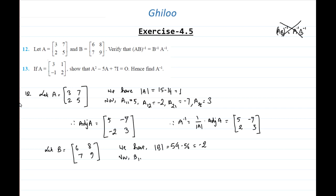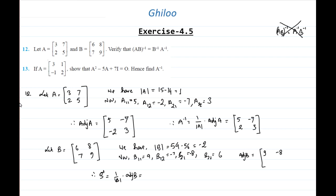The cofactors are: B₁₁ is 9, B₁₂ is minus 7, B₂₁ is minus 8, and B₂₂ is 6. Therefore B inverse equals 1 over the determinant of B times the adjoint of B. The adjoint of B is [9, -8; -7, 6], so B inverse is [−9/2, 4; 7/2, −3].